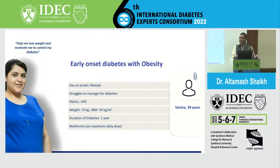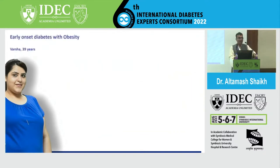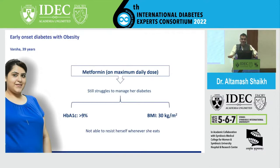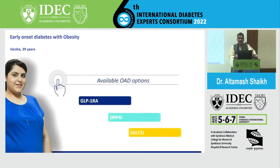These types of patients routinely come to our clinic having A1c of more than 9, even with recent onset of diabetes. She is not very regular as far as managing the diabetes or going to the doctor. Already on metformin at 2 grams per day with A1c more than 9. She is not able to resist herself whenever she eats — a very common complaint when we ask persons with diabetes.